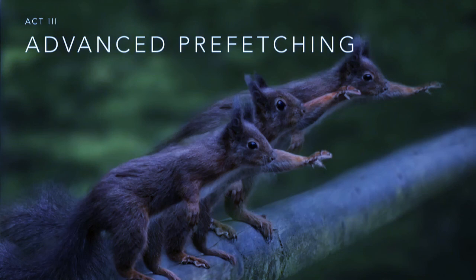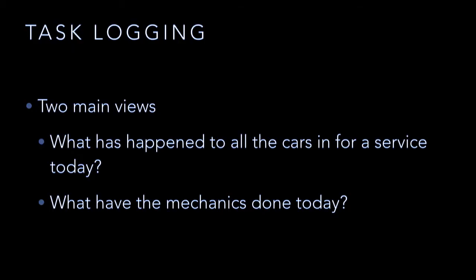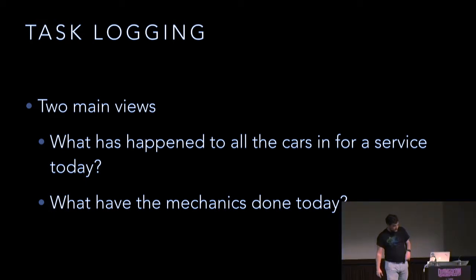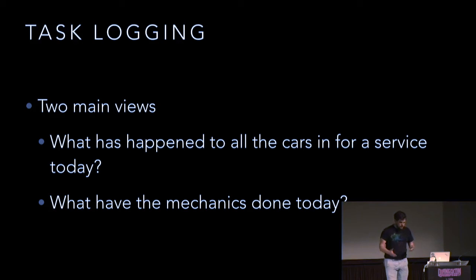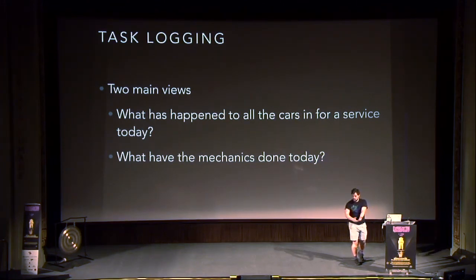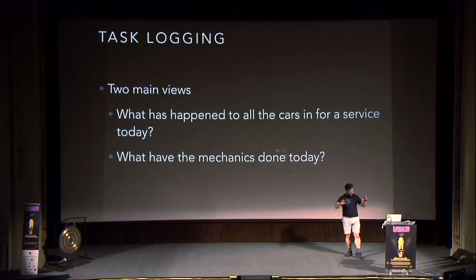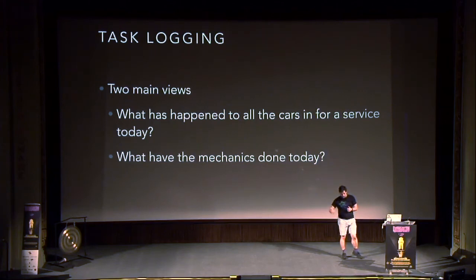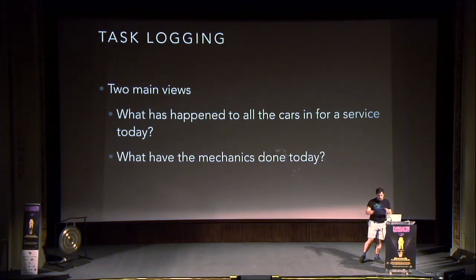Advanced prefetching. We've got two main views: what happened to all the cars that were in for a service today — showing each car with a list of all tasks performed and who did them — and the same data from the other side, looking at mechanics: what did Jenny do today, what did Clara do today, which cars was she working on and when.